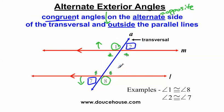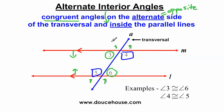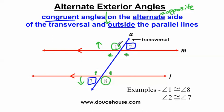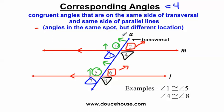To backtrack: alternate interior angles are angles on the inside of the parallel lines. Alternate exterior angles are both outside the parallel lines. Corresponding angles - one of them is on the outside of the parallel lines and one of them is on the inside. Angle one is outside the parallel lines and angle five is inside the parallel lines, so they conflict with the alternate interior or alternate exterior pattern because it's not both on the inside or both on the outside.